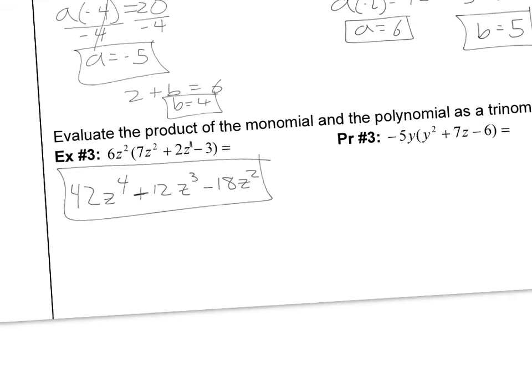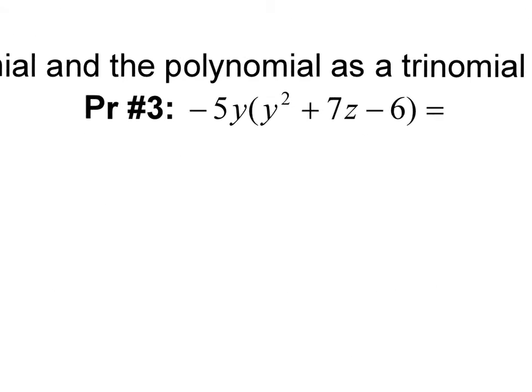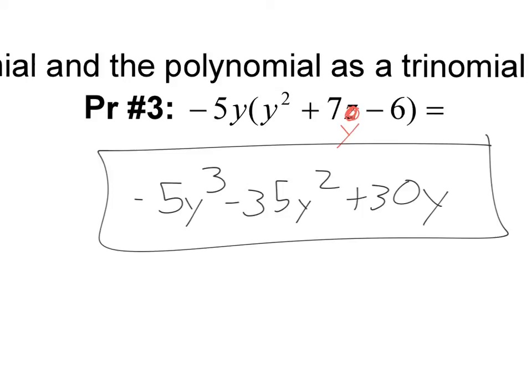For the next one, I want you to realize there's a slight typo — this isn't supposed to be a Z, it's supposed to be a Y. Go ahead and try this one on your own, pause the video and come back when you're ready. I got negative 5Y cubed minus 35Y squared plus 30Y.